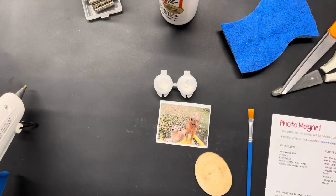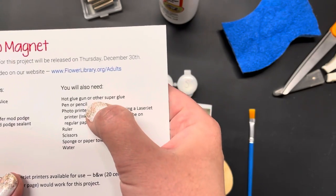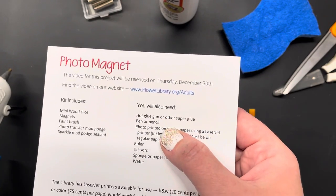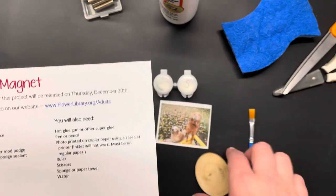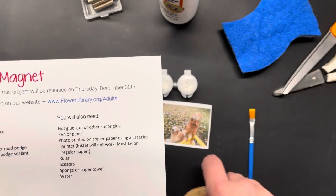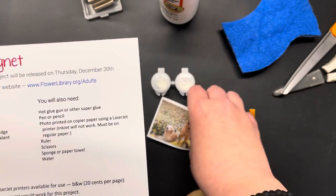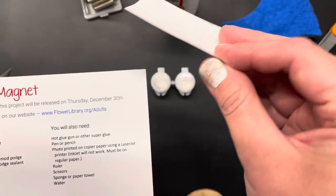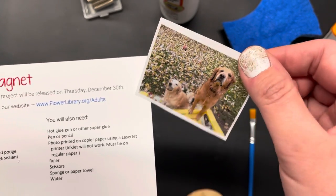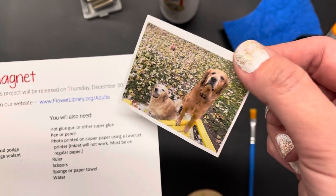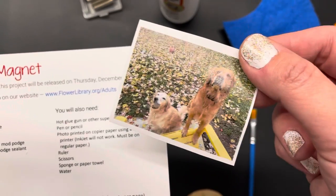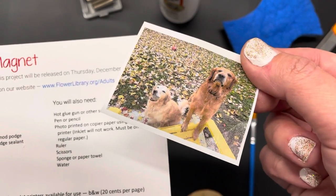The other items you will need: a hot glue gun or super glue would work to attach the magnets to the back of your wood slice, a pen or pencil potentially for tracing your photo before adding it to your wood slice. You will also need a photo printed on copier paper, so not on photo paper. It needs to be regular paper and you need to use a laser jet printer. An inkjet printer will not work with the photo transfer mod podge.